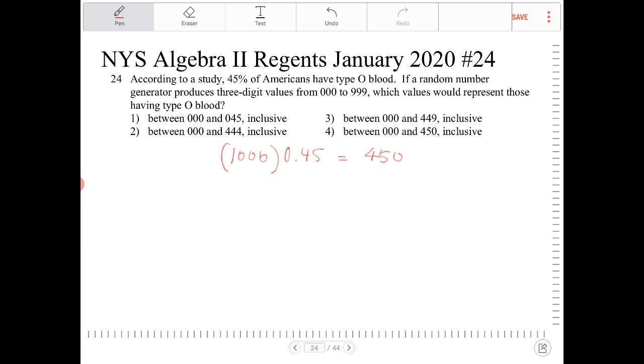What about option 2? That would be 445 numbers, because we're going from 000, which is one number, up to 444. So that would be 445 different numbers.